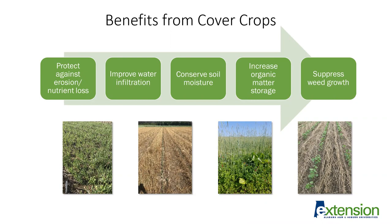To get us started thinking about how to select our cover crop species, I first want to talk about the amount of residue a cover crop can provide, because the amount of residue or biomass is very important for achieving certain goals. Even at low levels of biomass we can at least help protect against erosion and nutrient loss, and also help with water infiltration. But some benefits such as increased organic matter storage and weed suppression actually take very high levels of biomass. It's important for producers to think about what benefits they're trying to achieve as they select and manage their cover crops.